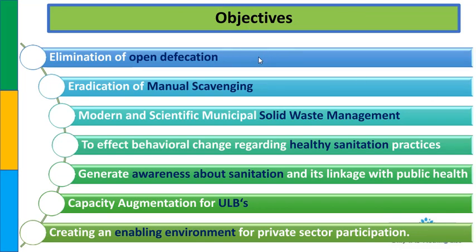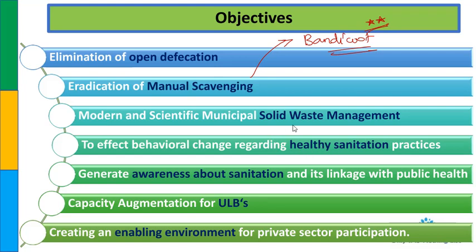Objectives की बात करें तो सबसे बड़ा objective है open defecation को eliminate करना - मतलब बाहर शौच के लिए खेतों या railway की पटरियों का use बंद करना. साथ ही manual scavenging को eradicate करना है. Solid waste management को scientific तरीके से collect और dispose करना, sanitation practices की awareness बढ़ाकर public health improve करना और out of pocket expenditure कम करना. Urban local bodies की capacity augmentation भी इसका हिस्सा है.